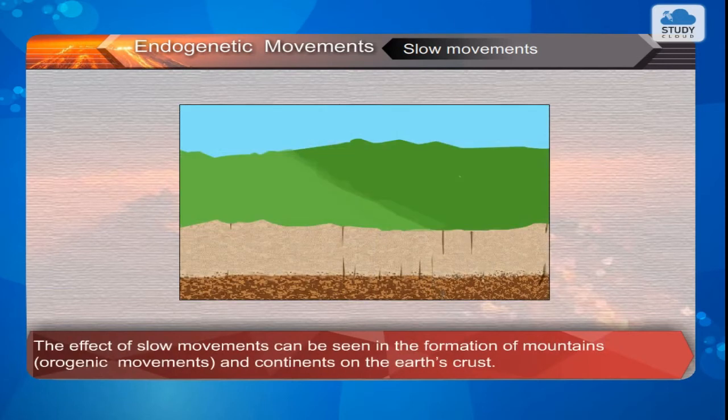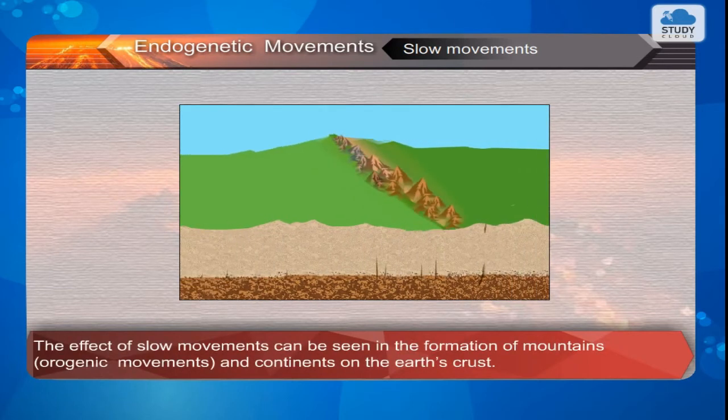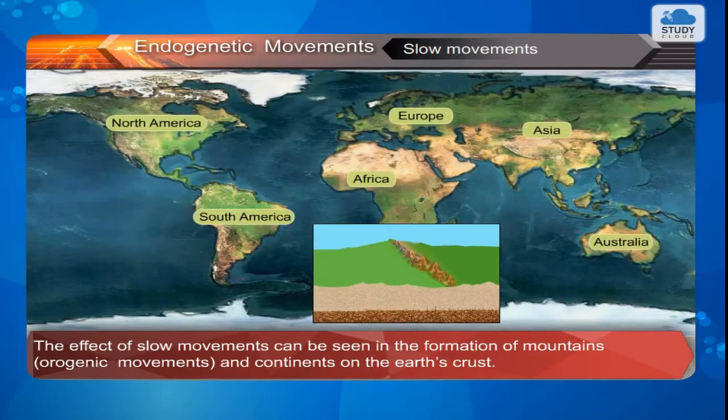Slow movements: The effect of slow movements can be seen in the formation of mountains through orogenic movements, and continents on the earth's crust.